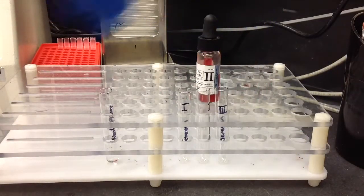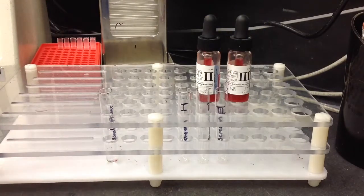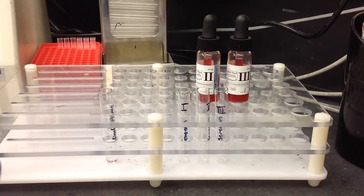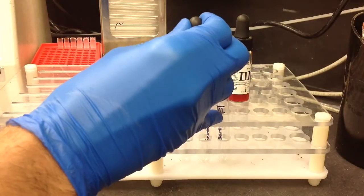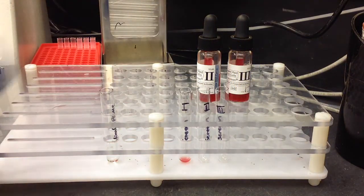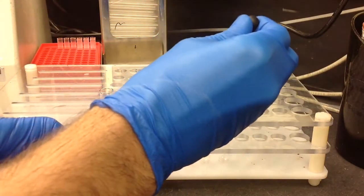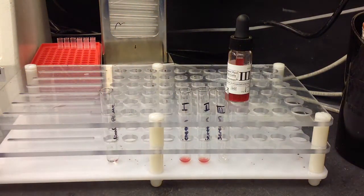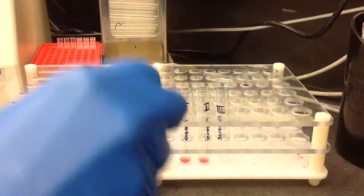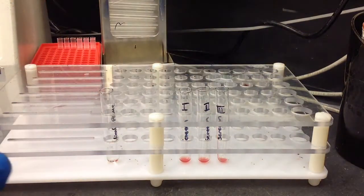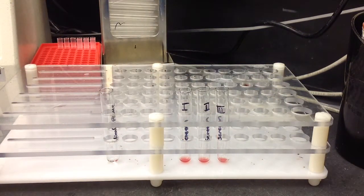So the first step is going to be taking your tubes and labeling them 1, 2, and 3, and then the patient's name. And then go ahead and add one drop of each one of the screen cells to their corresponding tube. So it's just one drop to each one of the tubes.